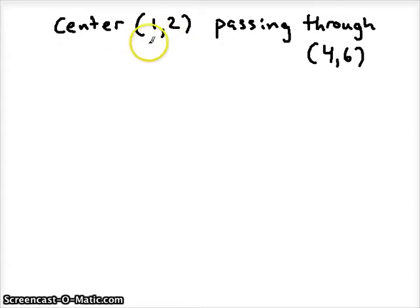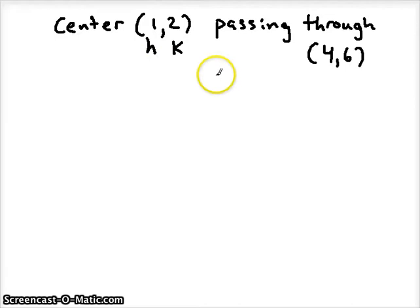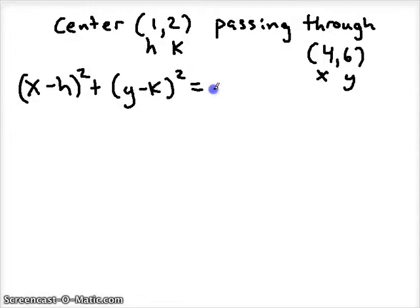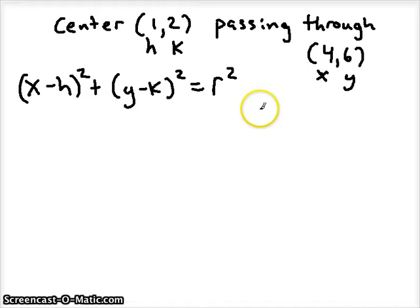Remember that the center coordinates are your H and your K, and anytime you have coordinates of a point on a graph those are always going to be your X and your Y values. So if we remember the standard form equation of our circle, it always equals R squared. All we have to do is substitute everything that we know and solve for what we don't know.